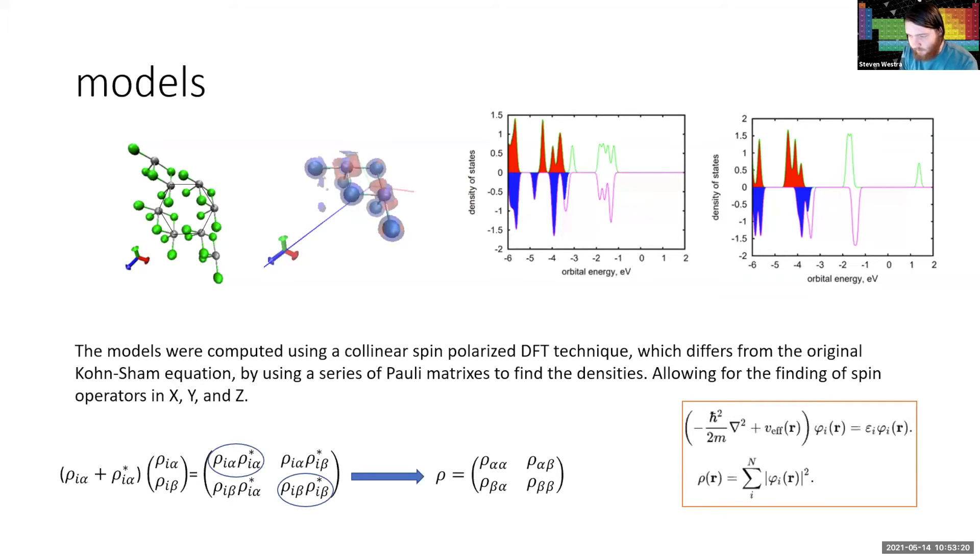And so the models that I worked with were computed using a collinear spin polarized DFT, which differs from original Kohn-Sham equations by using a series of Pauli matrices to find the densities. An important point of the collinear nature is that it only takes the real portions of the spin density and ignores off diagonal interactions shown with the blue circles as the real portions. And what this does is it allows us to find electron densities in terms of x, y, and z when they are otherwise identical. This differs from the original one in that it's a summation of matrices rather than just a total summation of the absolute value of rho i(r) squared.